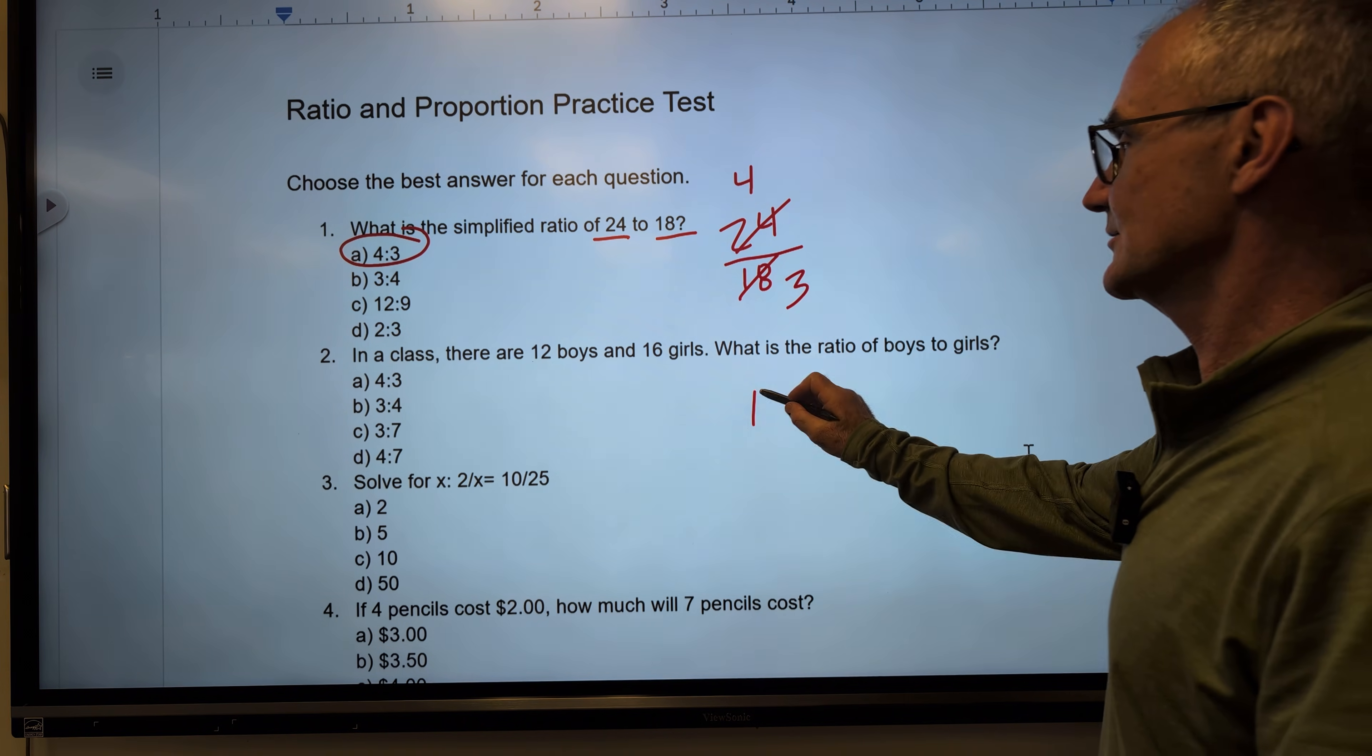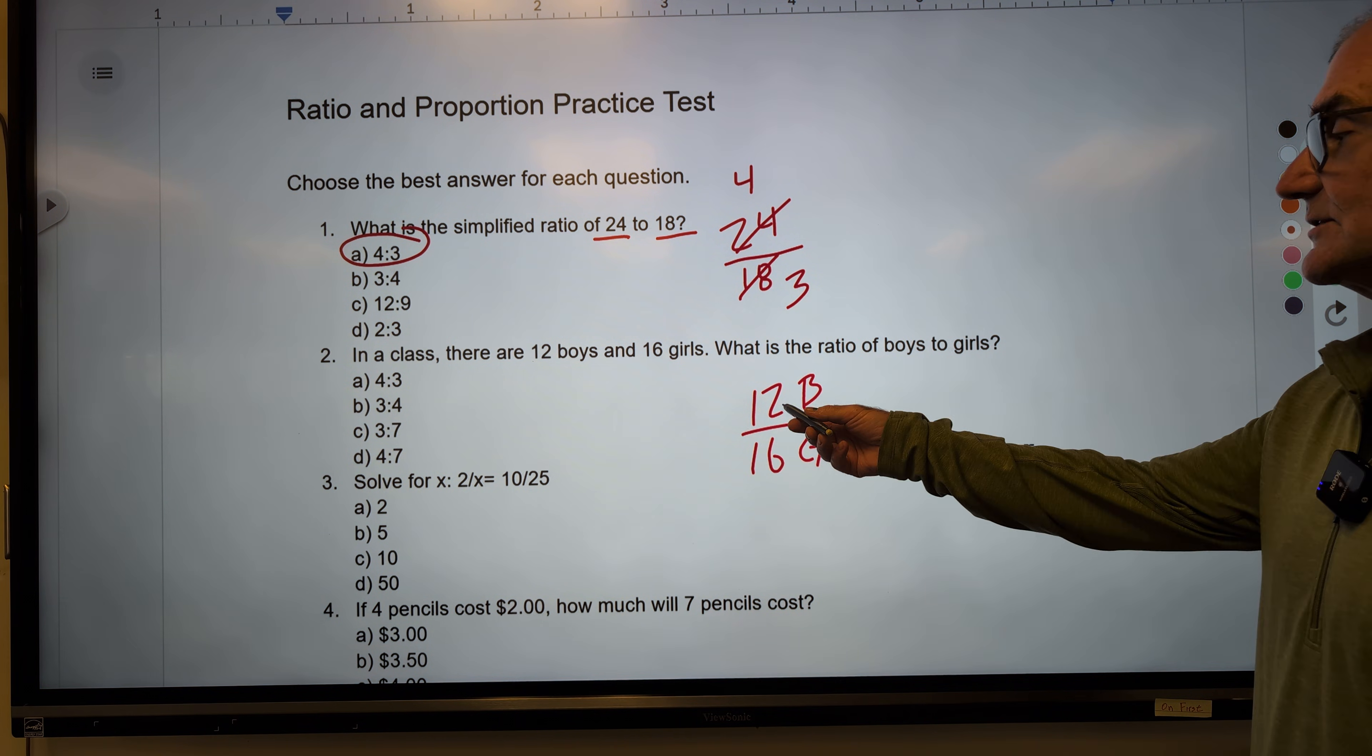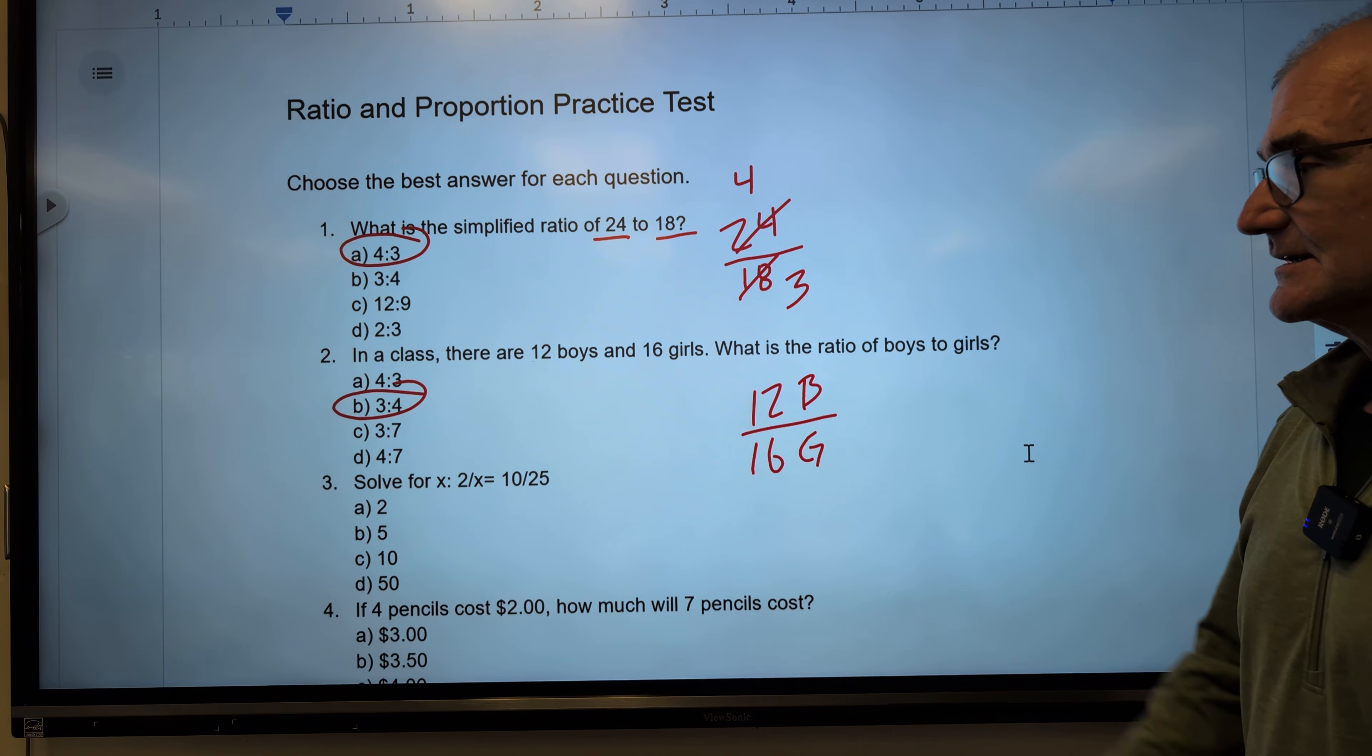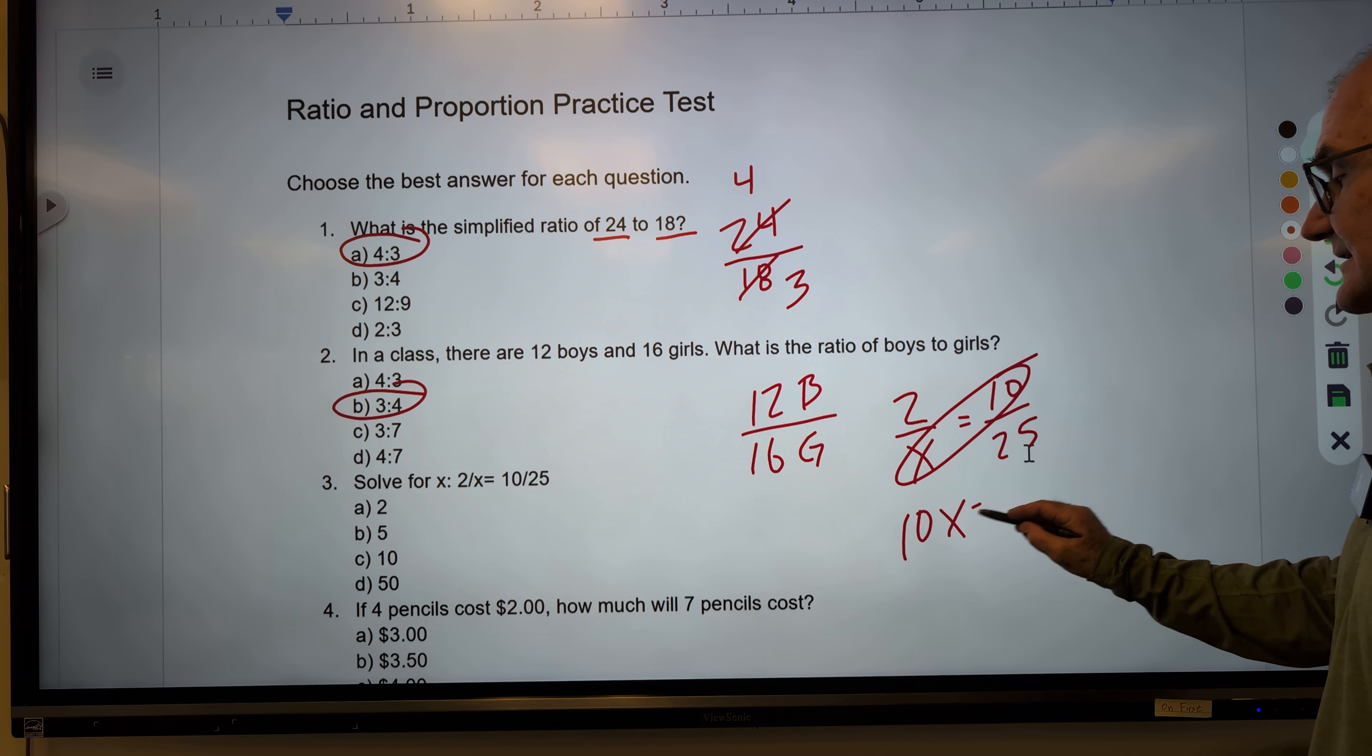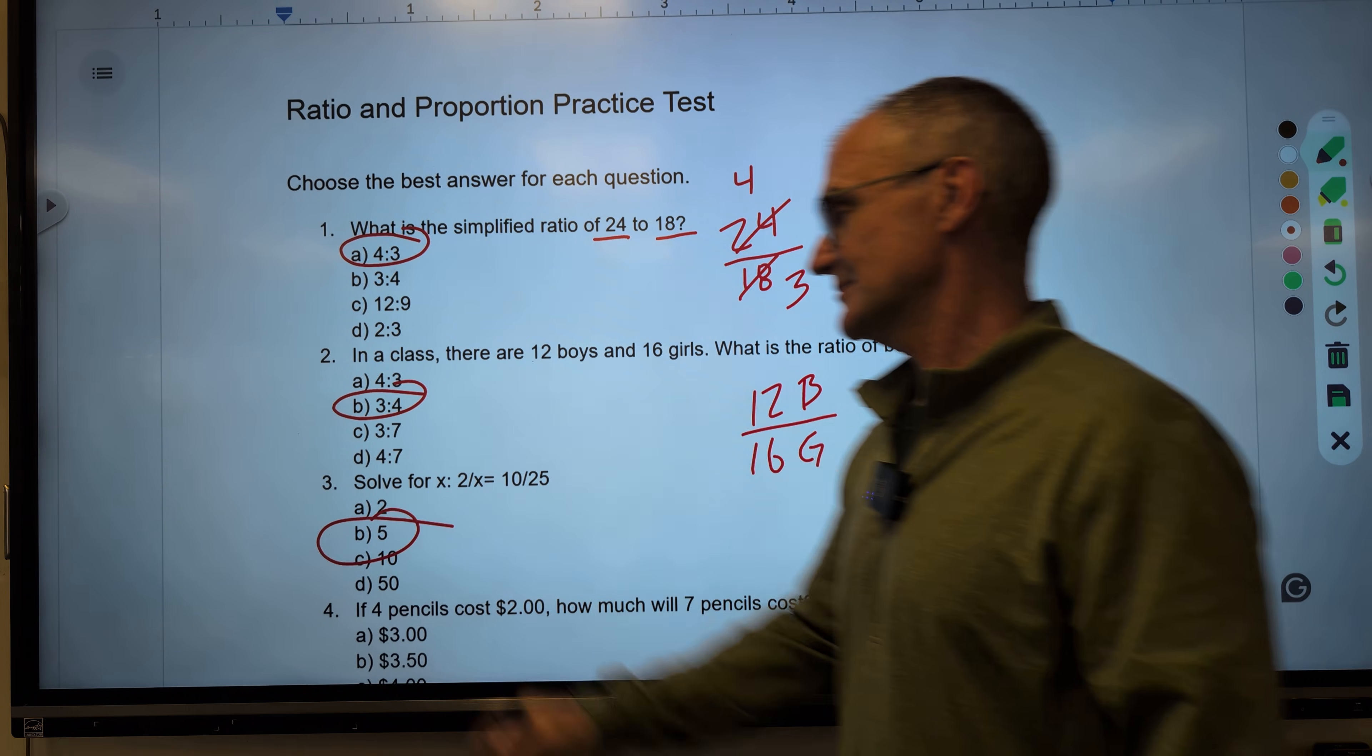Number 2. In a class, there are 12 boys and 16 girls. What is the ratio of boys to girls? 4 goes into here 3 times, into here 4 times, to give us 3/4. Correct answer B. Number 3. Solve for x. 2 is to x as 10 is to 25. Cross multiply. 10x equals 50. Divide both sides by 10. And x is equal to 50 divided by 10 or 5. Correct answer B right there.